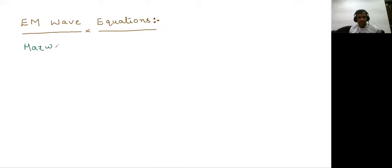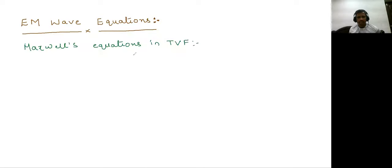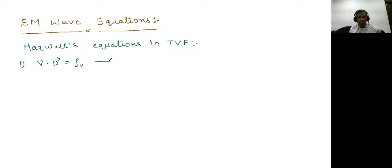Maxwell's equations in time varying fields. If you look at the first Maxwell equation, divergence of electric flux density is equal to rho V, which is volume charge density. This is the Maxwell equation which we get from Gauss's Law in electric field.